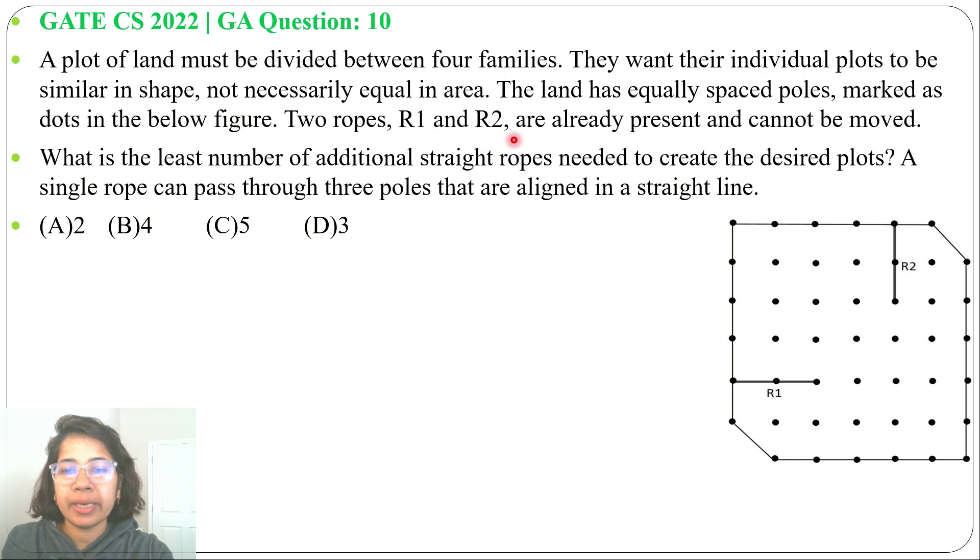Two ropes R1 and R2 are already present and cannot be moved. This is R1. This is R2. They can't move.